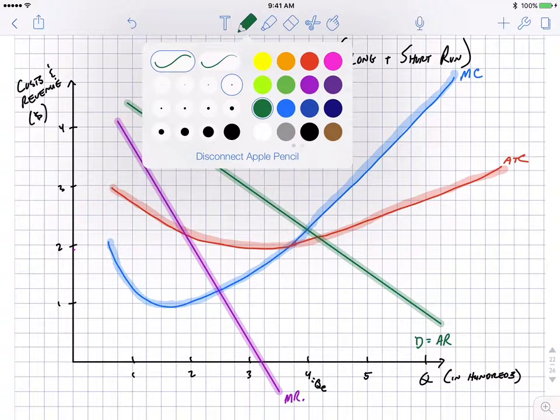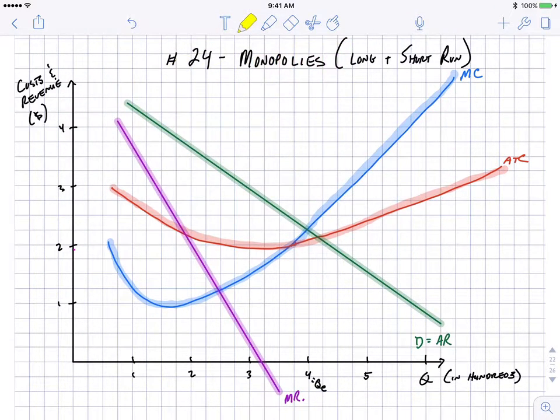That's our quick and basic shapes of the different curves. Let's point out a couple things about efficiency in this marketplace. First off, remember the demand is the same thing as average revenue. We'll get to that in a bit, but first off though, the first thing that firms want to know is whether they can make profit or where they should profit have a profit maximizing output level.